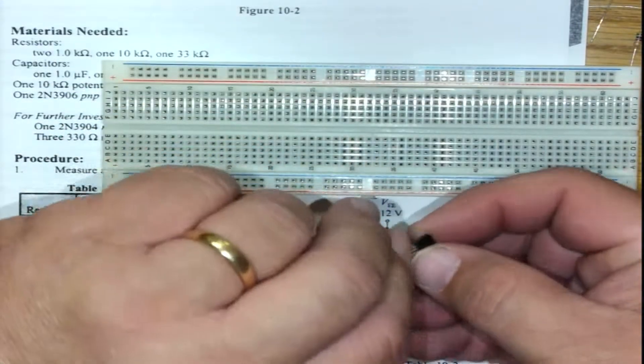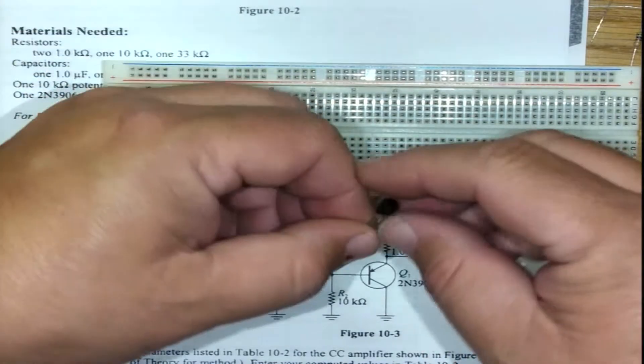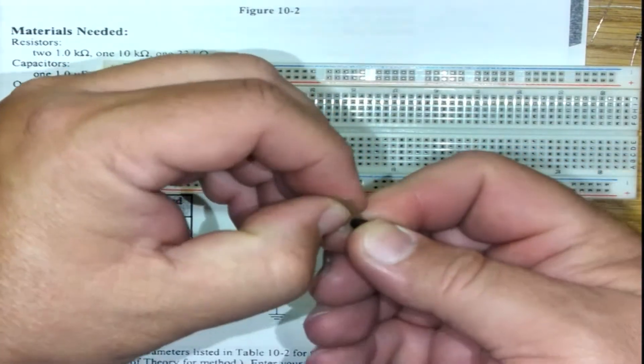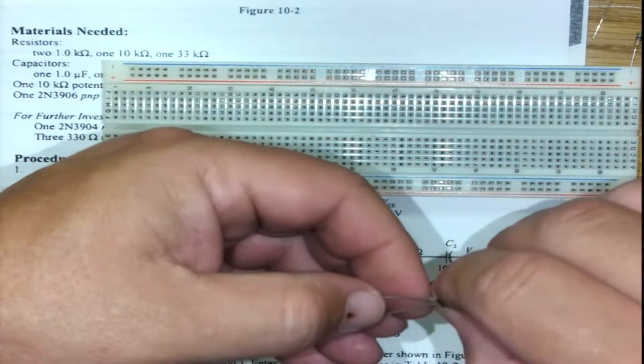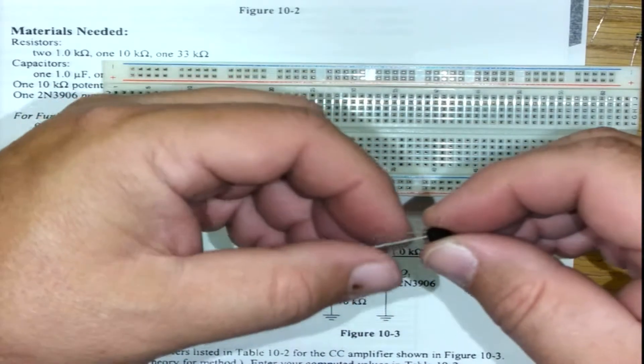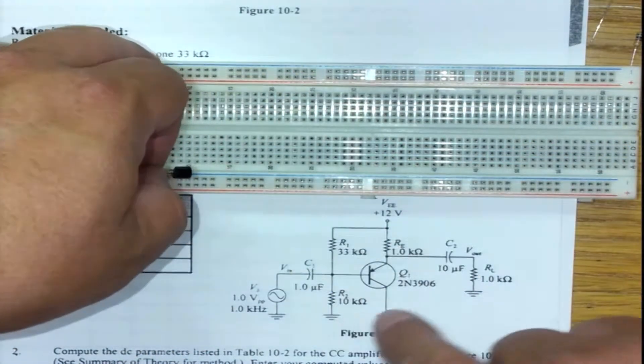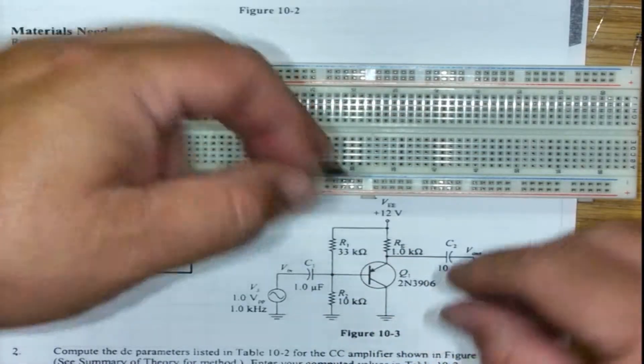I've got a transistor, and in this case it's the 3906. It's got three legs: the base, emitter, and collector. Always check the data sheet about the orientation of these legs. The idea is to orientate it so that we can put the components around the transistor as designed.